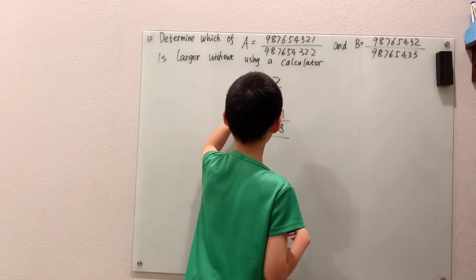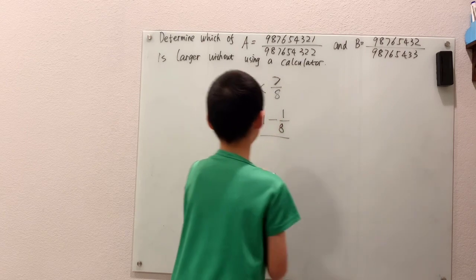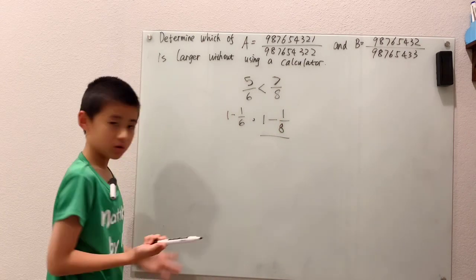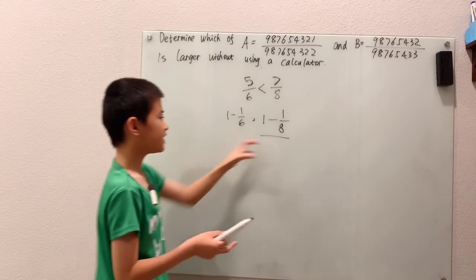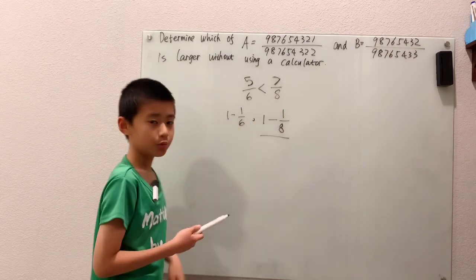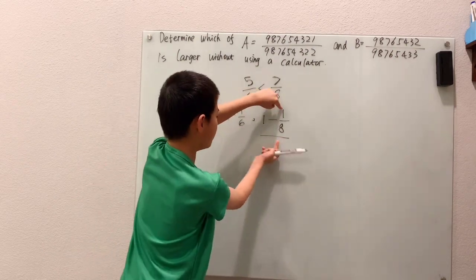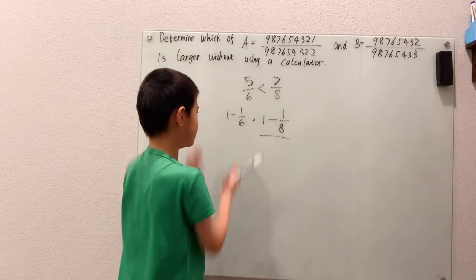This means the number you're subtracting the smallest amount from is greater. So this is a greater-than sign. Or as I like to think about it, I think of these as distances to 1. This distance, 1/8, compared to that distance, 1/6.